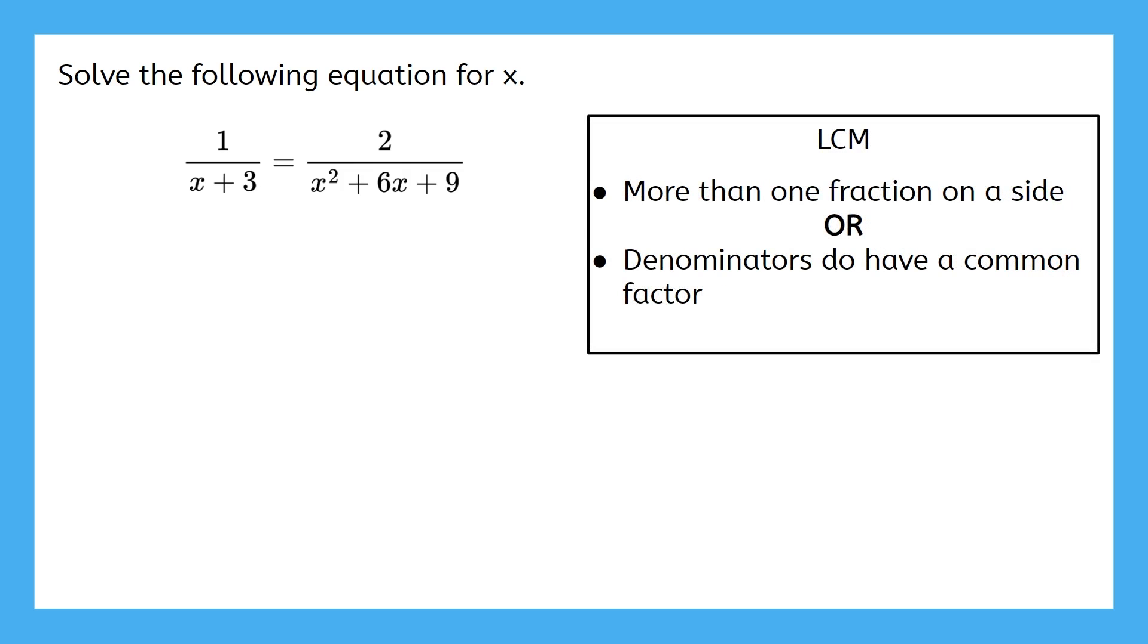That problem is here again, and the directions say to solve the following equation for x. We figured out in the last video that the cross product was not ideal for this problem, because we needed both of these requirements to be true. Unlike the cross product, when we use our LCM checklist, we just have to make sure that at least one of the requirements is true. And here, the second one is. So, let's give this problem a try using the LCM.